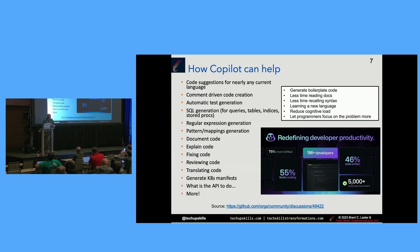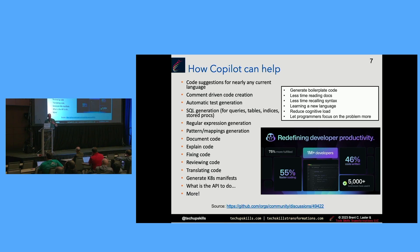And even more. The general big use cases: generating boilerplate code, less time reading docs, less time recalling syntax, helpful when learning a new language, and reducing the cognitive load — a fancy word for not having to worry and think as much about all the things that take the fun out of coding. The whole point is to let programmers focus on the problem more. Copilot is there to help handle the things you don't necessarily need to spend your time figuring out.